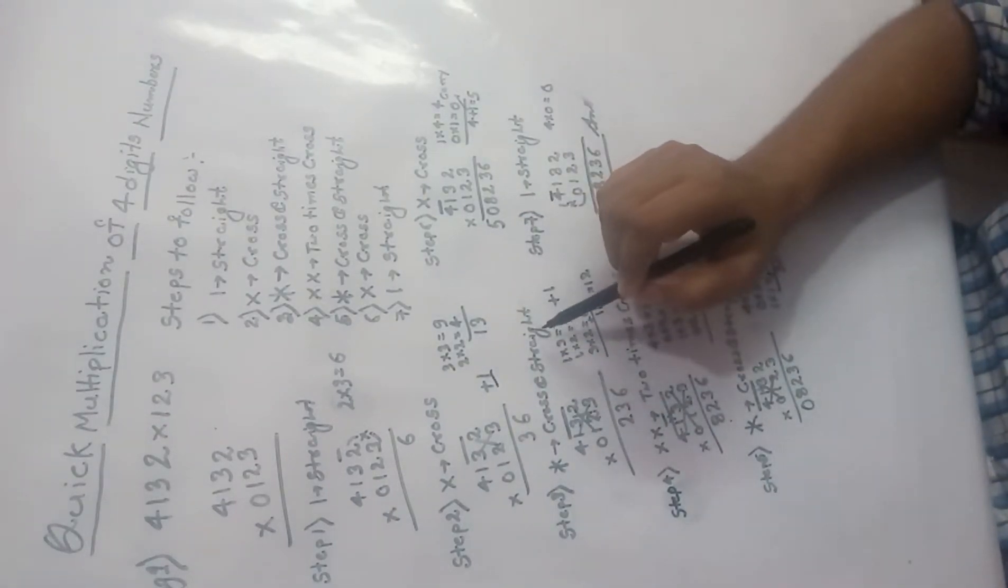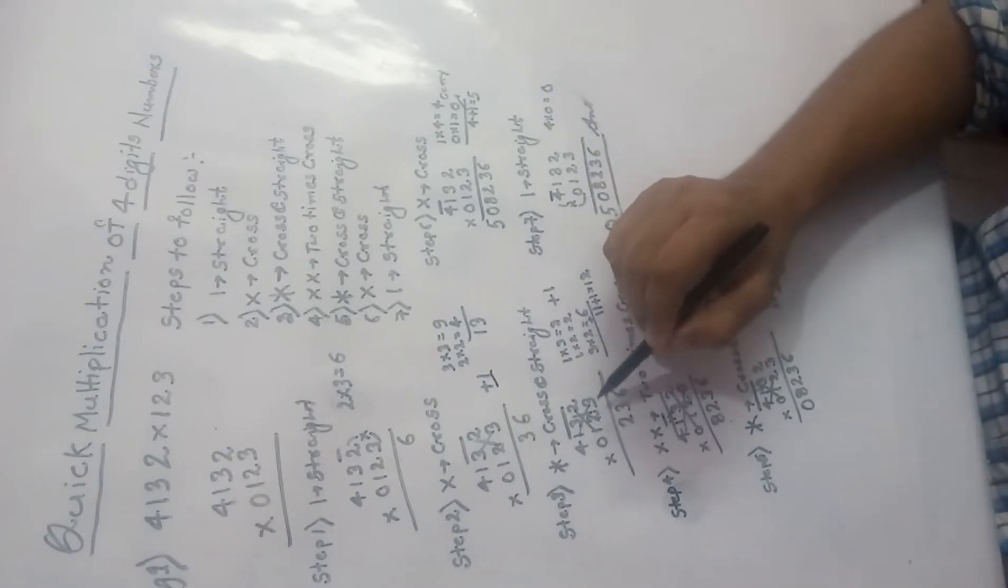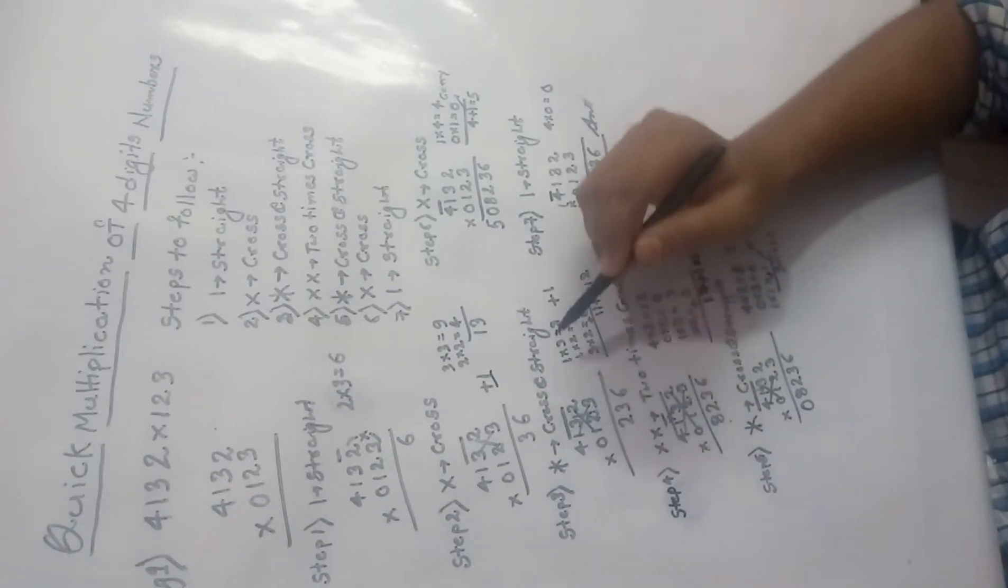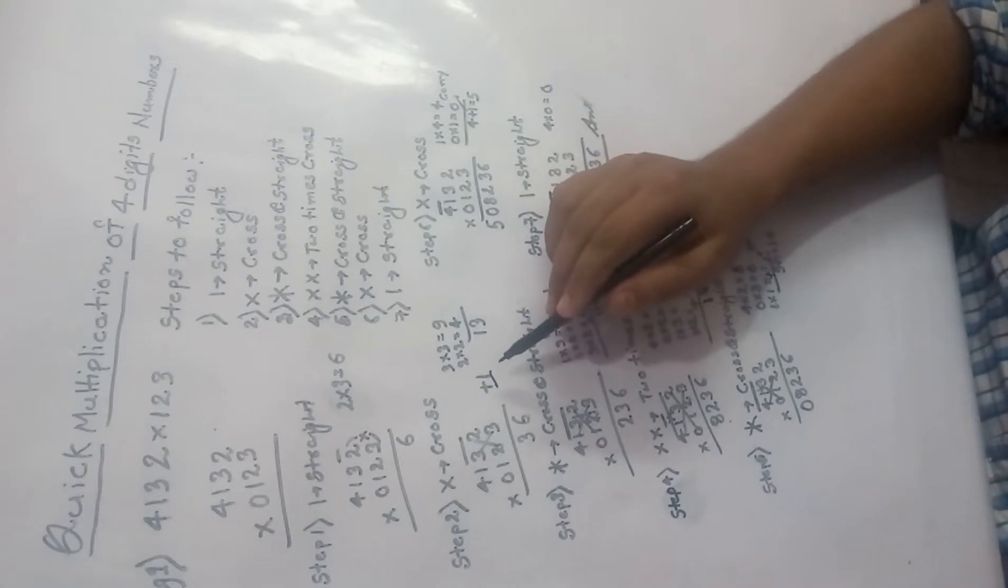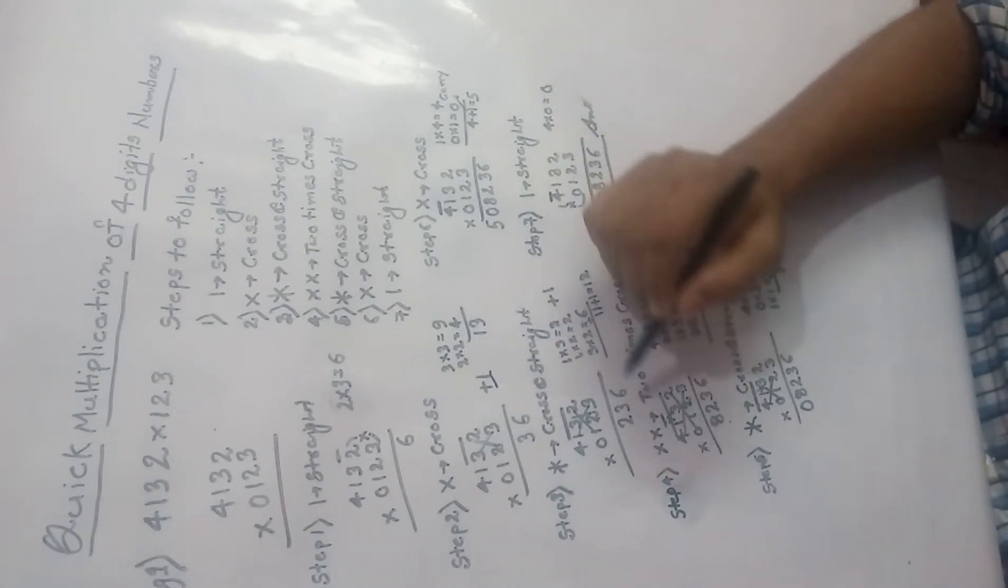Now cross and straight multiplication. So cross is 1 into 3 is 3, 1 into 2 is 2, and this is straight. So 3 into 2 is 6, so 3 plus 5, 5 plus 6 is 11, and plus 1 is carry, which is from step 2. So 11 plus 1 is 12, I have written 12, plus 1 is again carry.